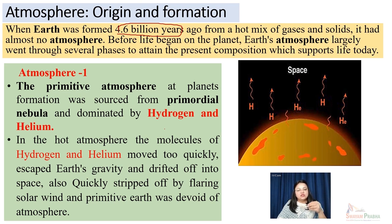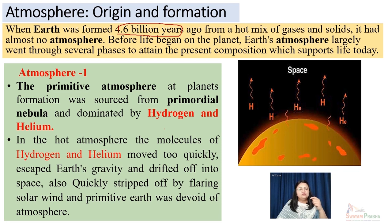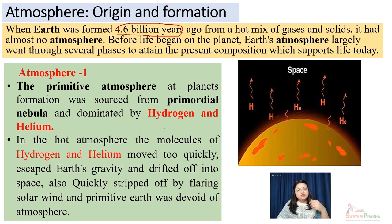This primitive atmosphere, which we call Atmosphere 1, was mainly composed of hydrogen and helium sourced from the contents of the nebula and outer space. However, in this hot atmosphere the molecules of hydrogen and helium were moving too rapidly because the nebula was spinning at very high speed, and they escaped the gravitational pull of earth. The earth was quickly stripped of hydrogen and helium because of the hot flaring solar winds in the primitive earth. So Atmosphere 1, the primitive atmosphere, was lost to outer space, and earth was again devoid of these gases.